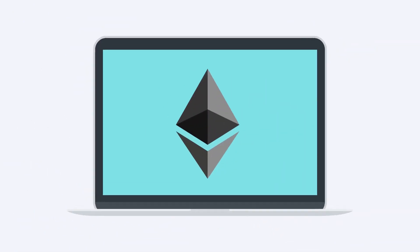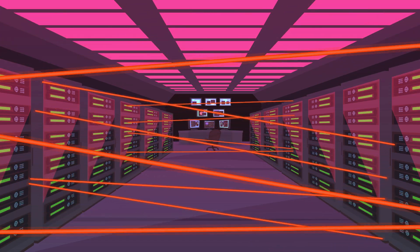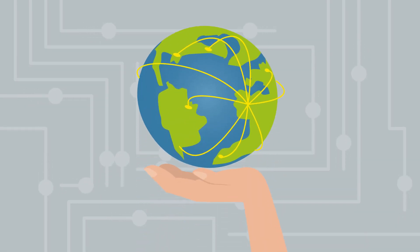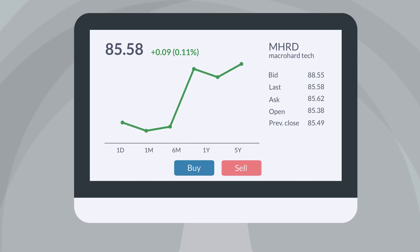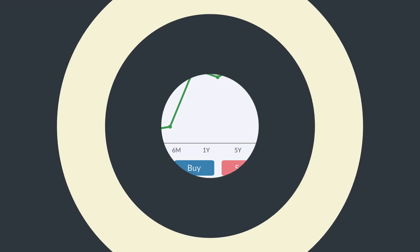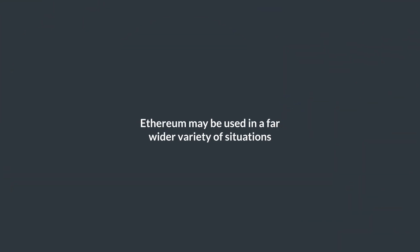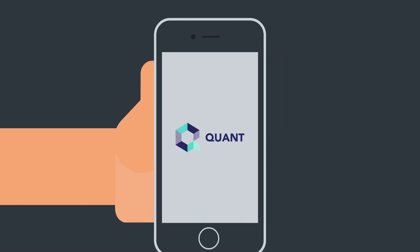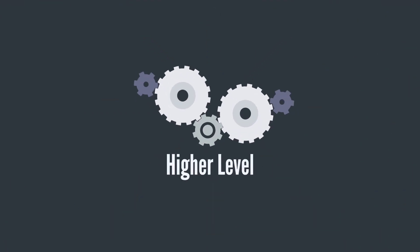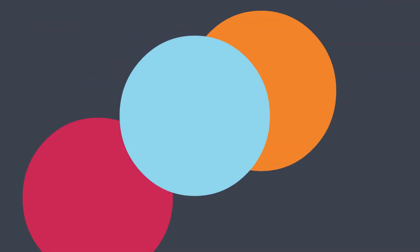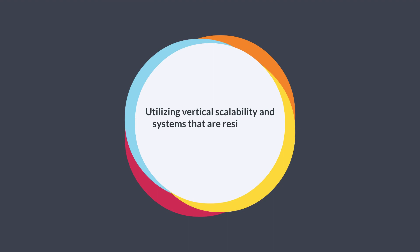As the Quant platform is built on Ethereum, it uses the robust security and interoperability features offered by the Ethereum ecosystem, in contrast to the blockchain that underpins Bitcoin, which is primarily concerned with giving users a means to exchange value. Ethereum may be used in a far wider variety of situations. You'll be able to use various features when you use Quant, including DEXs, DeFi, and blockchain games. Quant runs on a modular architecture that isolates itself from other ledgers at the application layer, operating on a higher level than these networks and utilizing vertical scalability and systems that are resilient to change.